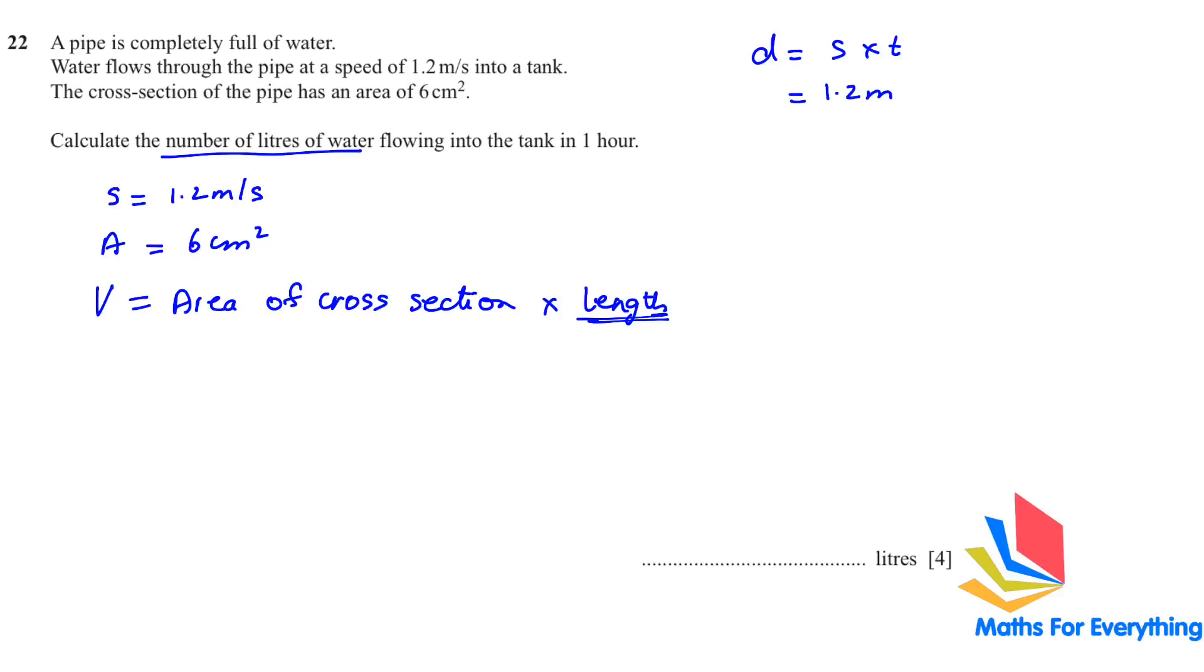Distance is equal to speed multiplied by time. Speed is 1.2 meter per second. And time is in one hour. So, one hour. First, we will change the speed into centimeter. To do that, we have to multiply by 100. And to change the hour into seconds, because we have seconds here, we have to multiply by 3600. That is 60 minutes. And in each minute, there are 60 seconds. So, 60 multiplied by 60. Put this in the calculator. And you will get 43200 centimeter.